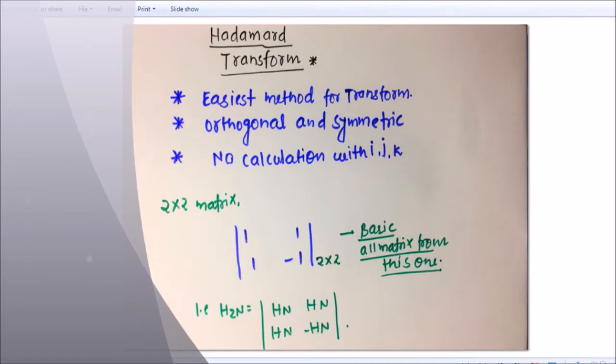If you see DFT, DIT compression, then it is very easy. It is very simple. It is totally a matrix basis where you don't have to do I, J and all the multiplication. So the easiest method for transform is orthogonal and symmetric and no calculation with I, J and K.